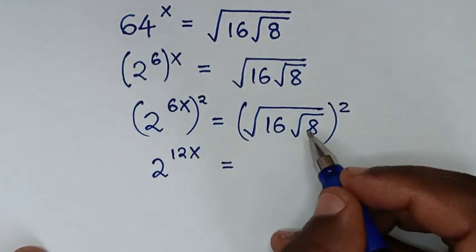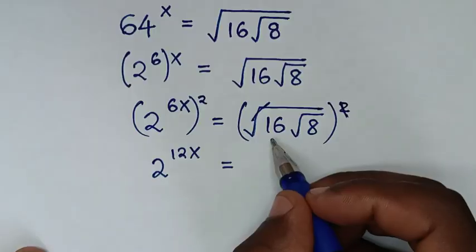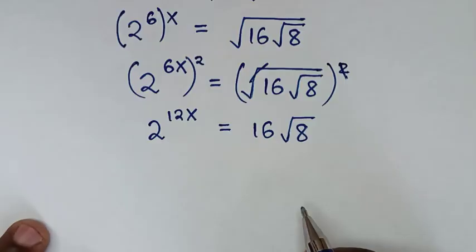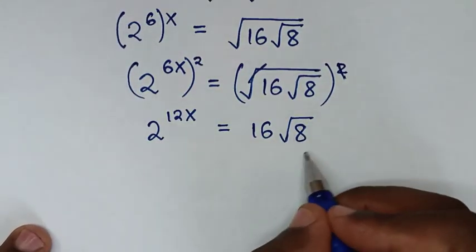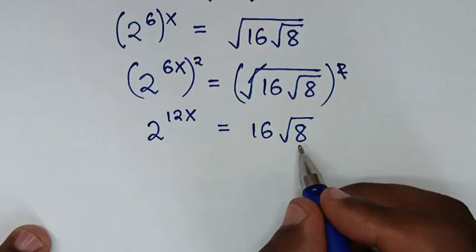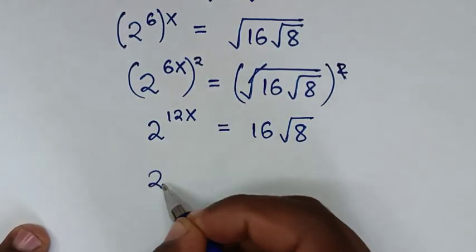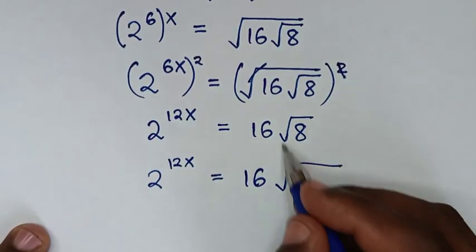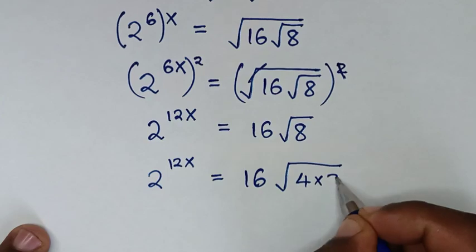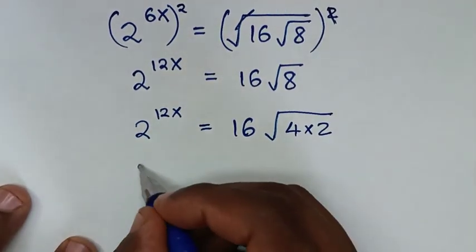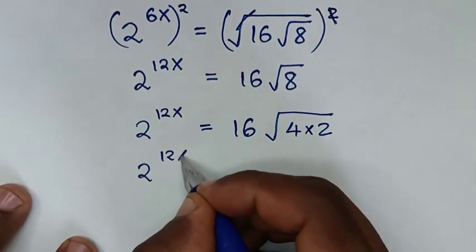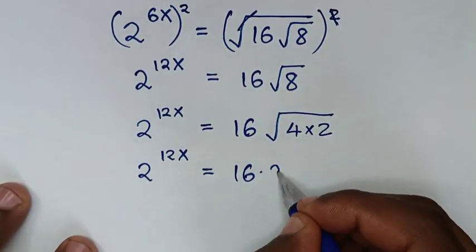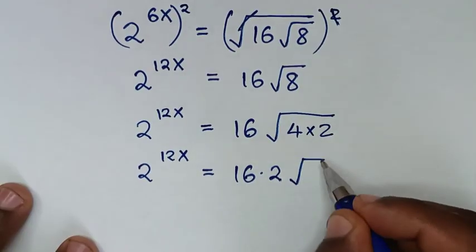After squaring, the square root cancels on the right side, giving us 16 times the square root of 8. We simplify the square root of 8 as the square root of 4 times 2, which equals 2 times the square root of 2. So the equation becomes 2^(12x) = 16 times 2 times the square root of 2.